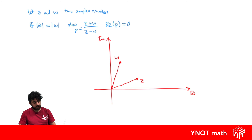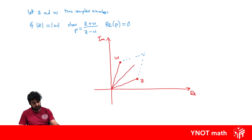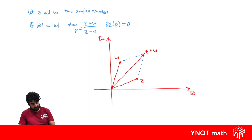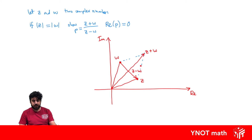Let's draw the expressions in. For z plus w, we shift the vectors and connect to get our expression for z plus w, and our expression for z minus w goes from w to z. Now, if the modulus of z equals the modulus of w, we have a rhombus, and the intersection of the diagonals must be at 90 degrees.